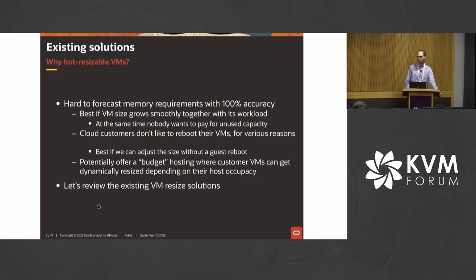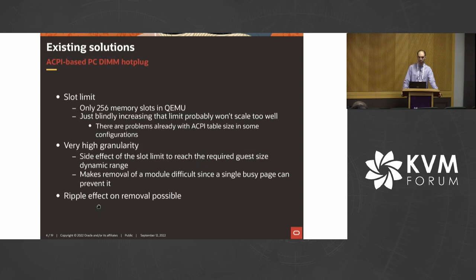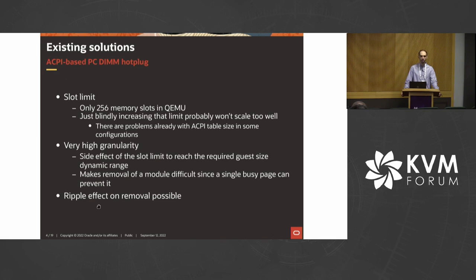Let's review existing VM resize solutions before coming to the new one. The most obvious is ACPI-based PC-DIMM hot plug, but it has limitations. You have to have a slot for DIMMs, and currently there are only 256 memory slots in QEMU. Increasing this doesn't scale — some configurations already result in ACPI tables being too big and throwing warnings, and increasing the slot count would make the table size even larger.